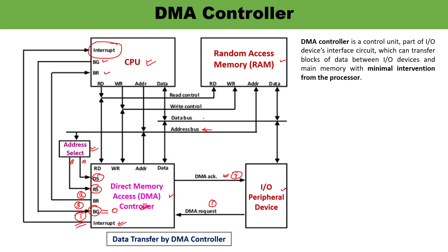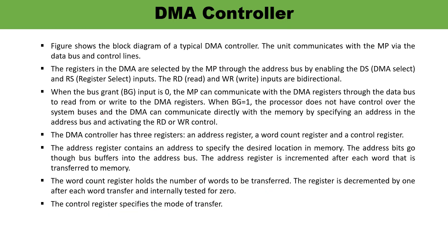In this diagram, you can see read control, write control, data buses, and address buses and how they are connected. When the bus grant is active high (logic 1), there will be a data transfer between the IO devices and memory; otherwise, normal operation continues. Thank you so much for watching this video.